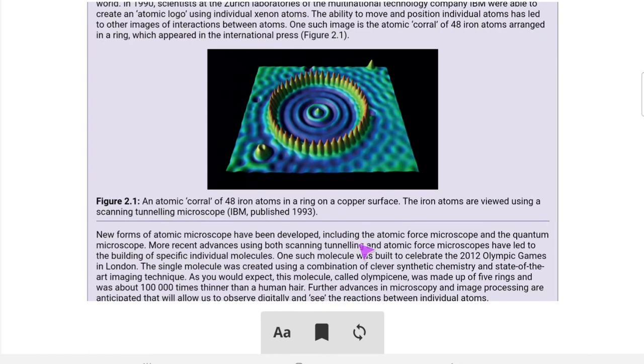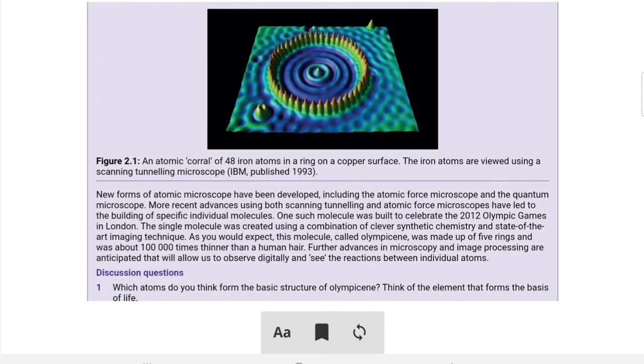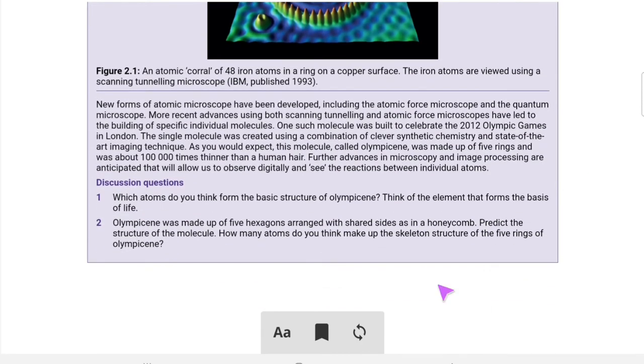New forms of atomic microscope have been developed including atomic force microscope and quantum microscope. More recent advances using both scanning tunneling and atomic force microscope have led to the building of specific individual molecules. One such molecule was built to celebrate the 2012 Olympics games in London. Single molecules were created using a combination of clever synthetic chemistry and state-of-the-art imaging techniques. This molecule called olympicine was made up of five rings.